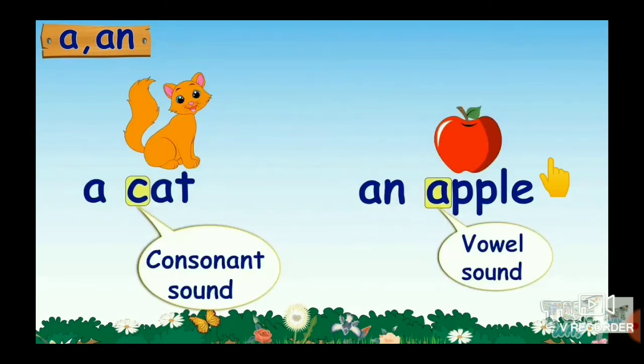So, children, we learned that we use A or AN before singular naming words. And the rule for using AN is the naming word should begin with the vowel sound. Understood? And the rule for using A is the naming word should begin with a consonant sound. That means like this C, C letter.